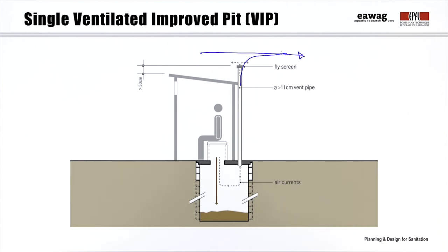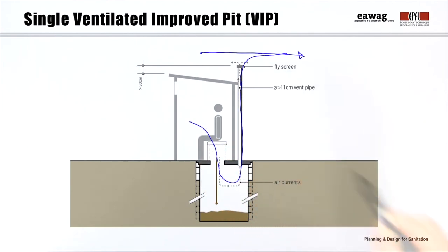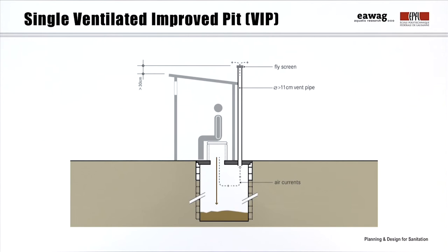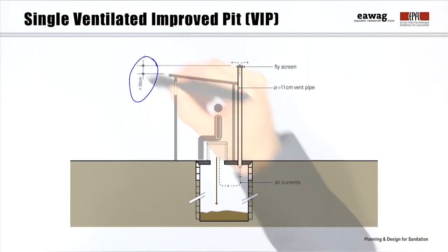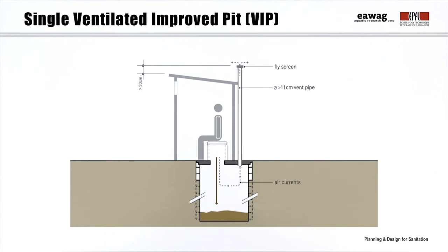If the vent pipe is well fitted and the edges of the pit are airtight, the air is drawn through the user interface into the pit, moves up inside the vent pipe and escapes into the atmosphere. For an effective ventilation, the top of the pipe should extend at least 30 cm over the roof of the superstructure. The vent works best in windy areas, but where there is little wind, its effectiveness can be improved by painting the pipe black and exposing it to the sun. The heat difference between the cool pit and the warm vent creates an updraft that pulls the air out of the pit.